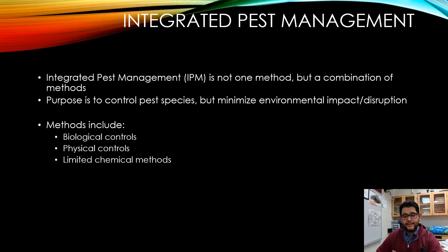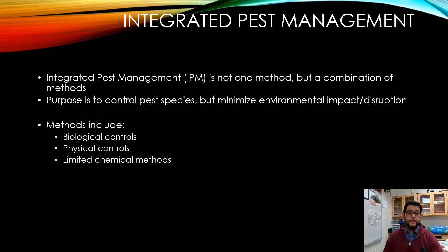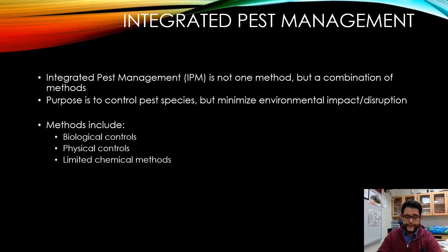IPM — Integrated Pest Management — is not just one method you can use to reduce your pest amount, but a series of steps that might reduce the traditional pesticide that would normally be used during an agricultural or other issue. Some of these methods can include biological controls, physical controls, and of course some chemicals can be used as a pesticide.